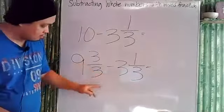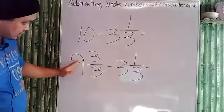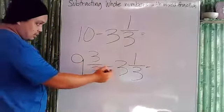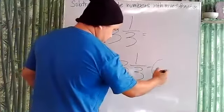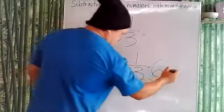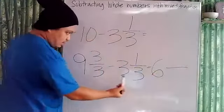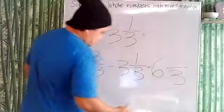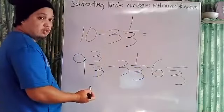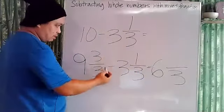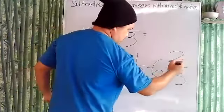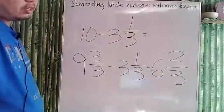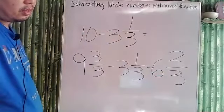Now we subtract nine and three-thirds minus three and one-third. They have the same denominator. Subtract the whole numbers: nine minus three is six. For the fraction, keep the denominator three and subtract the numerators: three minus one is two. Our answer is six and two-thirds.